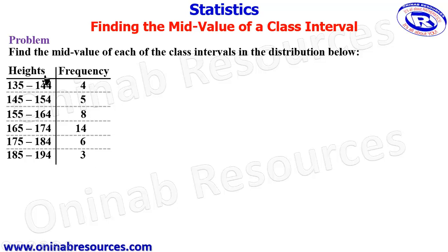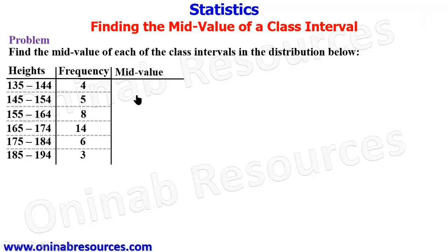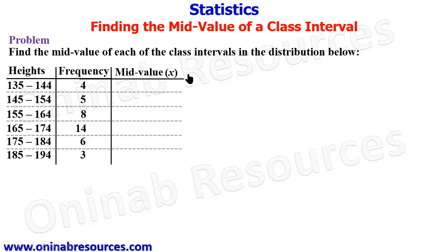We have to find the mid value of each class interval. This is the lower class interval, while this is the upper class interval. To find the mid value, we create another column. The mid value in grouped data is referred to as X.